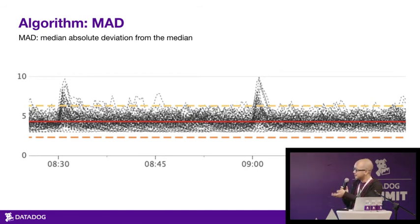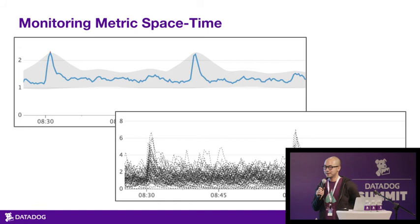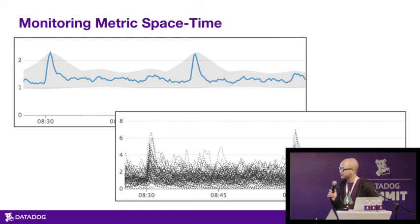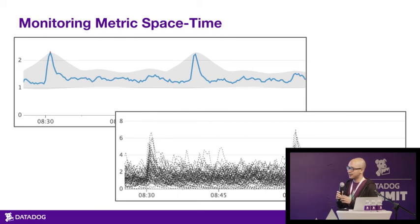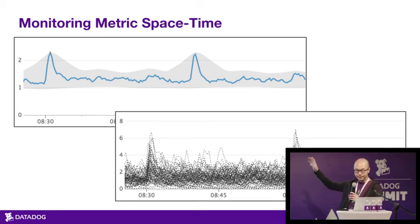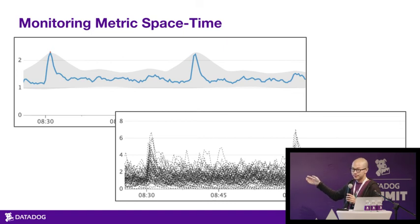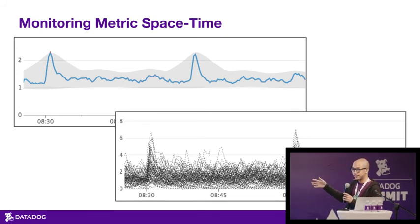Now that we have both anomaly detection and outlier detection, how do we combine them? Anomaly detection is not something you should apply to all metrics — it's most useful for metrics with some trend or seasonality. Outlier detection also shouldn't be applied to every metric — it should be for groups of metrics that should be behaving similarly. The prototypical use case: say you have a metric for some application with nice seasonal behavior — use anomaly detection on it in aggregate. And if you're worried about a particular host going bad, also apply outlier detection to the group of hosts. By monitoring both the historical time aspect in aggregate and the spatial aspect across all hosts, you get the best of both worlds.